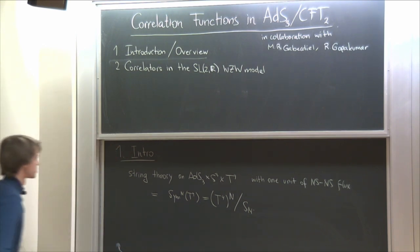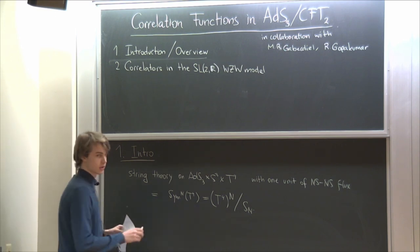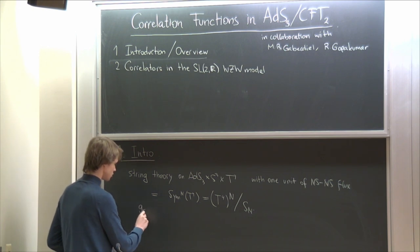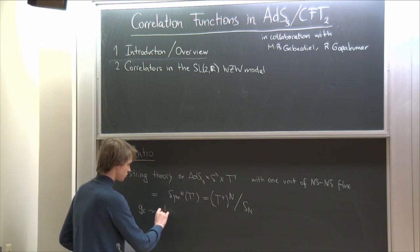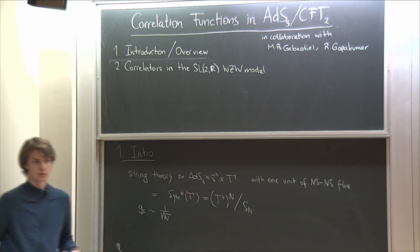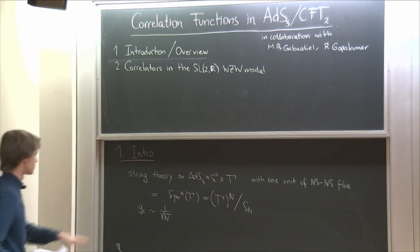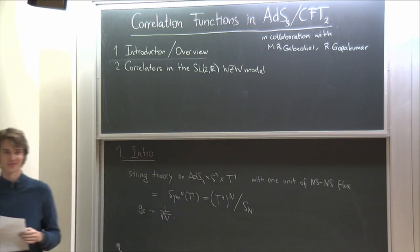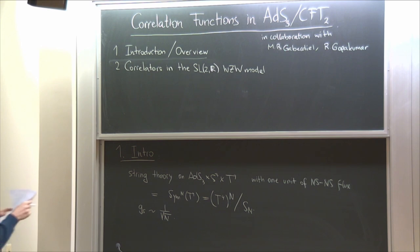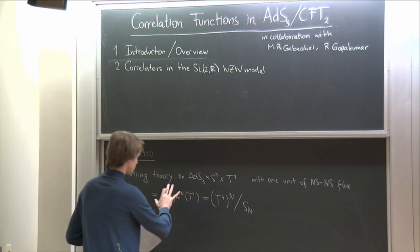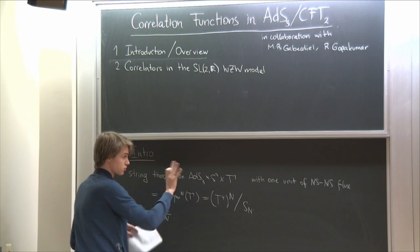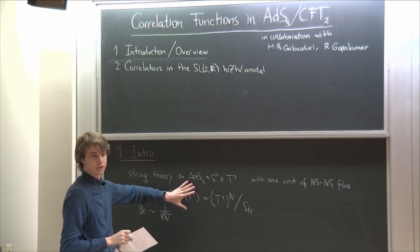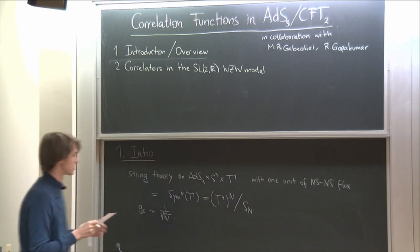I should stress that this duality should be understood as a perturbative duality. I cannot say anything non-perturbative, and I mean perturbative in g-string. So g-string should be identified with 1 over square root of N. In this talk I will only stick to the sphere contribution on both sides. There is some genus expansion in the symmetric product, which should correspond to the genus expansion in string theory.